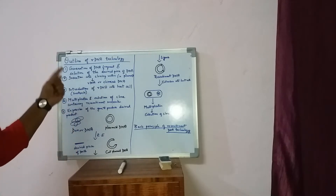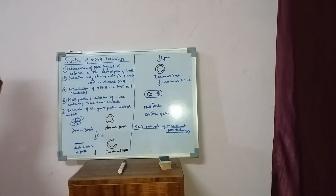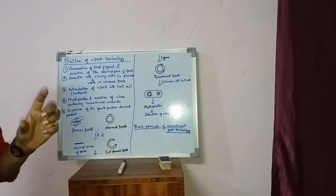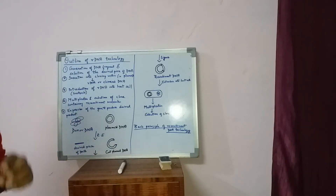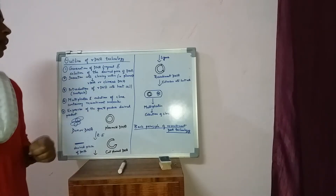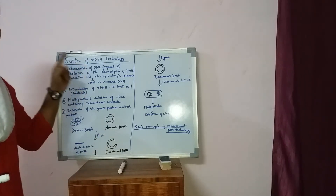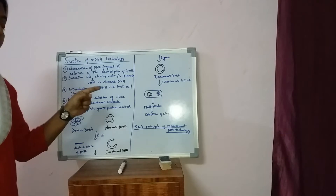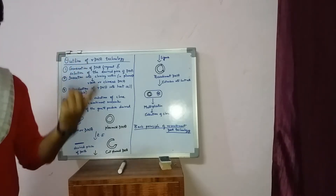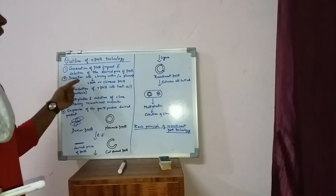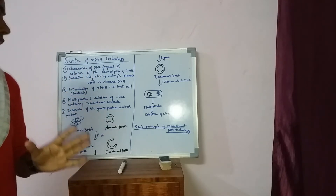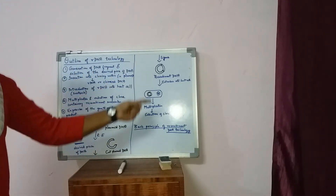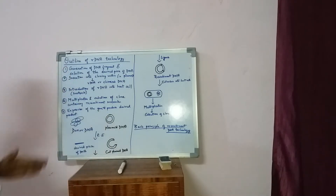The second step will be insertion of that particular DNA into the cloning vector, which is nothing but the plasmid DNA. We will use the same restriction enzyme to cut the DNA fragment — to generate the DNA fragment — as well as to cut open the cloning vector, that is the plasmid. We will see the diagrammatic representation one by one.